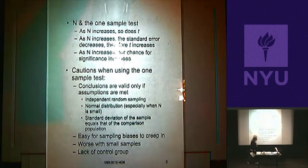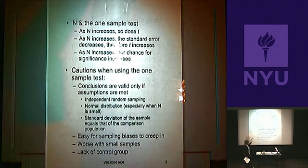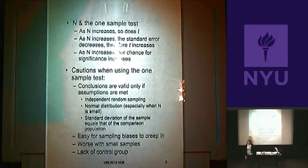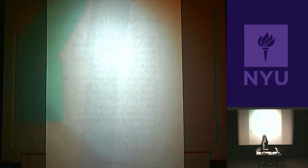Cautions for the one-sample test: you should meet your assumptions — independent random sampling, normal distributions, and that the standard deviation of the sample equals that of the comparison population. It's easy for sampling biases to creep in when you're using just one group, especially with small samples. There's also no control group, which makes conclusions difficult. One-sample tests are rarely done in practice; this is taught as a building block to more complex tests.